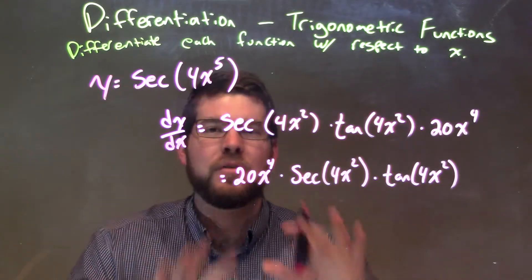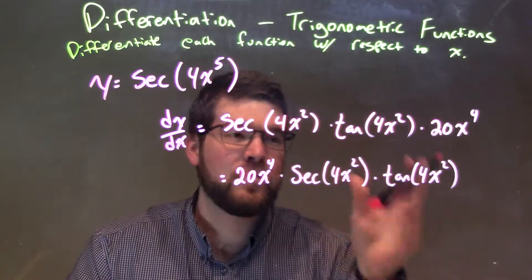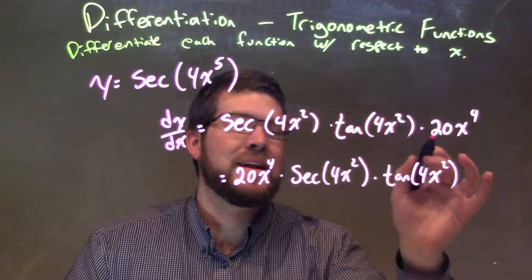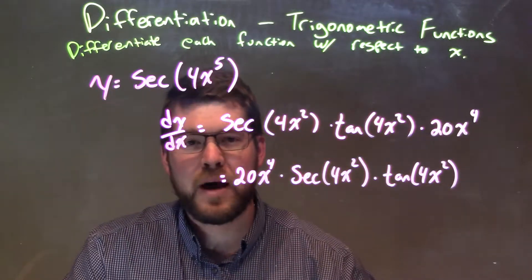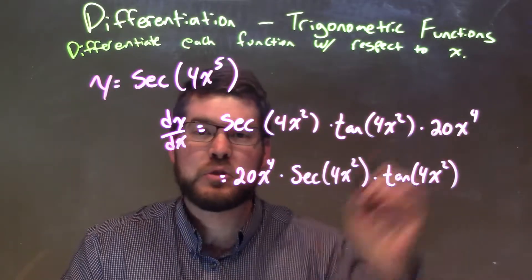Then we're going to plug in that 4x to the 5th power into those parentheses. Then, using chain rule, so we have derivative of the outside, we need to take the derivative of the inside. Chain rule states that we need to take the derivative of 4x to the 5th power, which comes out to be 20x to the 4th.